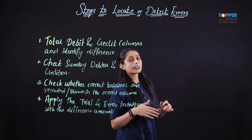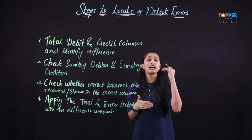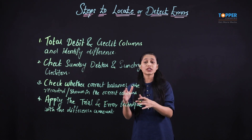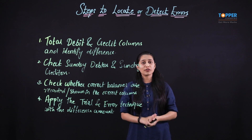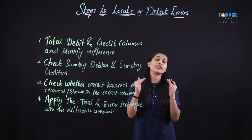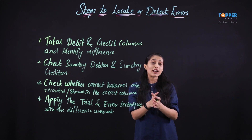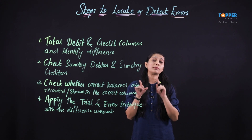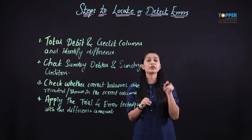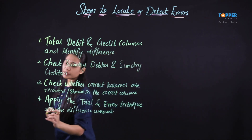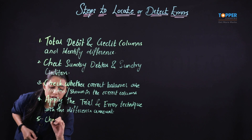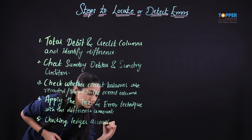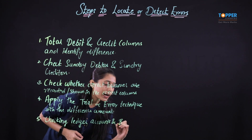It is very much possible that this particular error must have occurred at the very first step, that is at the time of recording in the original books. It is also very much possible that such an error took place in the ledger account. Therefore, the fifth important step tells us to check the ledger that has been prepared and also to balance the ledger accounts again, so as to check whether there is any error while preparing the ledger accounts and balancing the same.